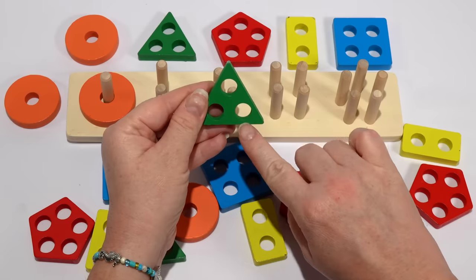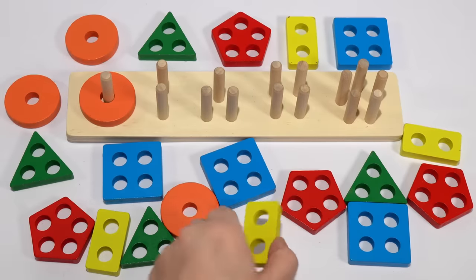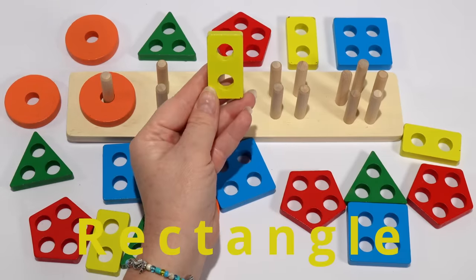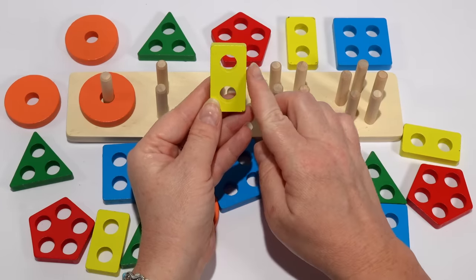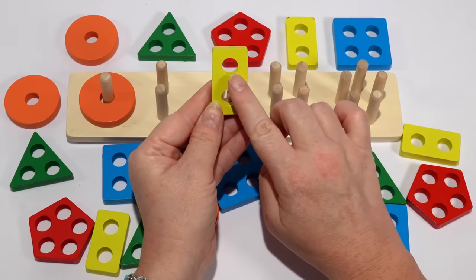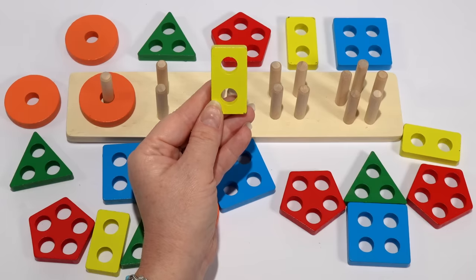One, two, three. Does our rectangle have only two holes? That's right, our rectangle has two holes. One, two. And our rectangle is yellow.